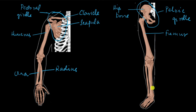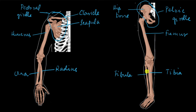Similar to radius and ulna, the portion below the knee has two bones: the tibia and the fibula. To tell them apart, the bone that looks more feeble — thin and feeble compared to the other — is the fibula. There is also an extra bone in the leg not present in the arm: this rounded bone is the kneecap, called the patella.